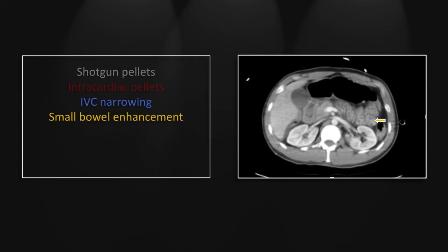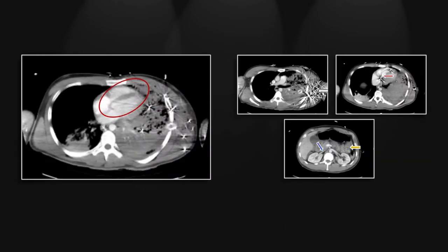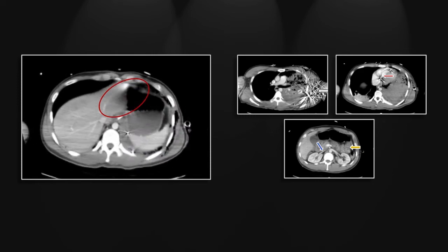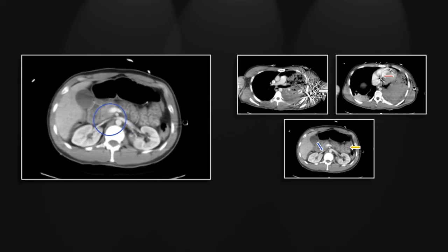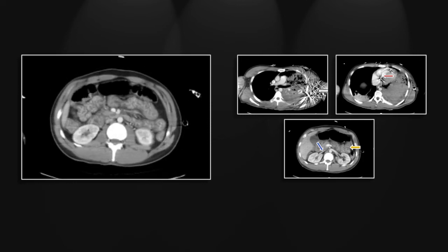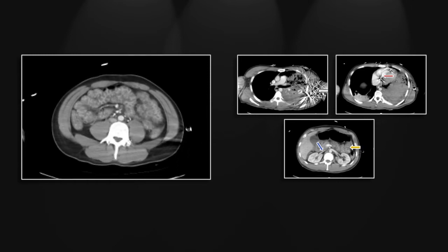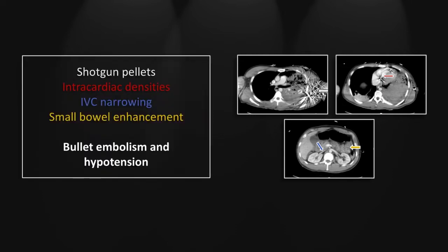In addition, note the hypodense thickening of the small bowel with contrasting prominent mucosal enhancement, indicative of small bowel hypoperfusion, again consistent with a hypovolemic state. Here are those intracardiac densities, that narrowed inferior vena cava, and throughout the small bowel — hypodense, thickened, with prominent enhancing mucosa. You can see why many people refer to this as fishbone bowel. So that is a case of bullet embolism and resulting hypotension and small bowel hypoperfusion.